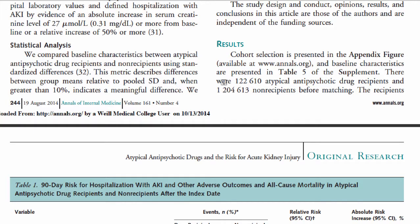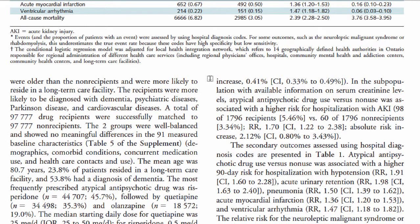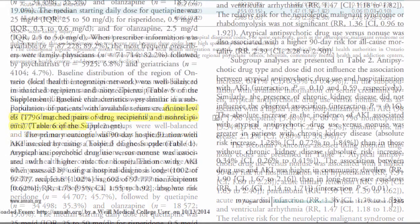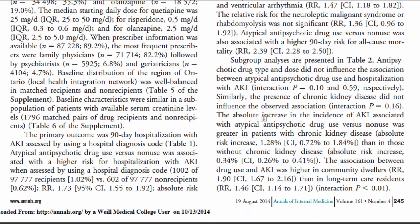If we go back to the text of the article we can see that there were approximately 122,000 patients who received an atypical antipsychotic drug and there were almost 1.2 million patients who did not receive the drug. As mentioned in the previous video, the researchers created a matched sample: a total of 97,000 patients received the drug and 97,000 patients did not. This is called a matched sample. Scrolling further in the results section, we can see that 1,002 patients who received the drug had kidney injury and 602 patients who did not receive the drug had kidney injury.